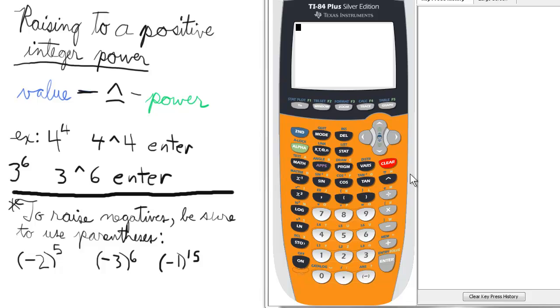Let's get started with an example. We'll raise 4 to the fourth power. 4 is the base, raising it to, with the caret symbol there, 4, enter. So we get the answer 256.